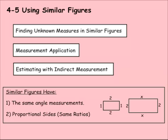Lesson 5 of Chapter 4 is using similar figures. We're going to use similar figures to solve proportions and find measures. First we'll find measures, then we'll do a measurement application, and then we'll do estimating with indirect measurement.